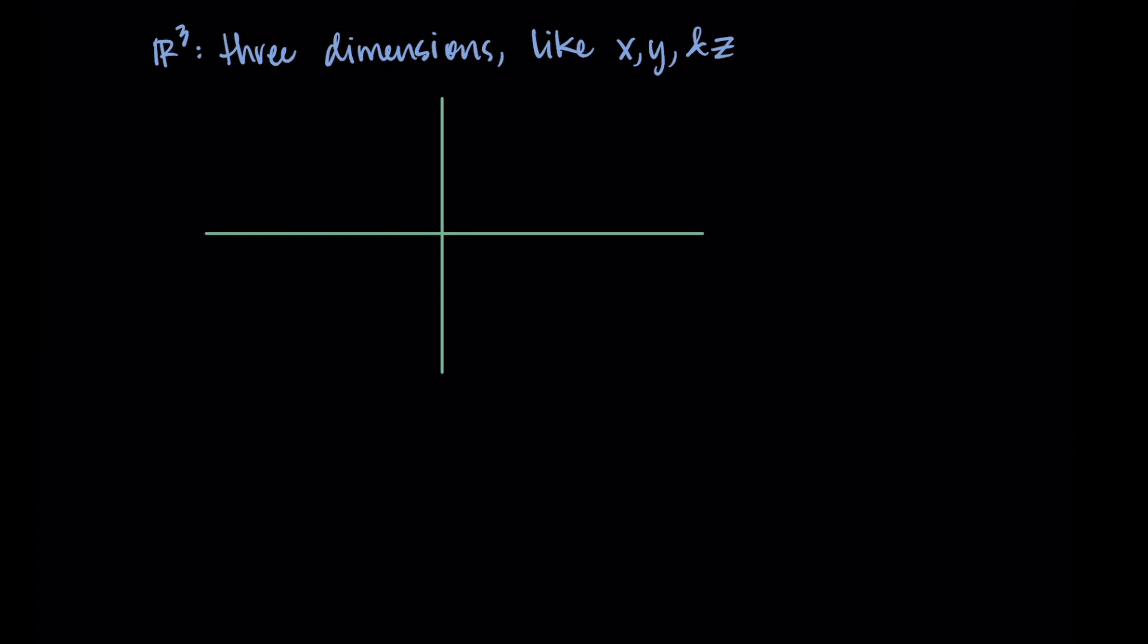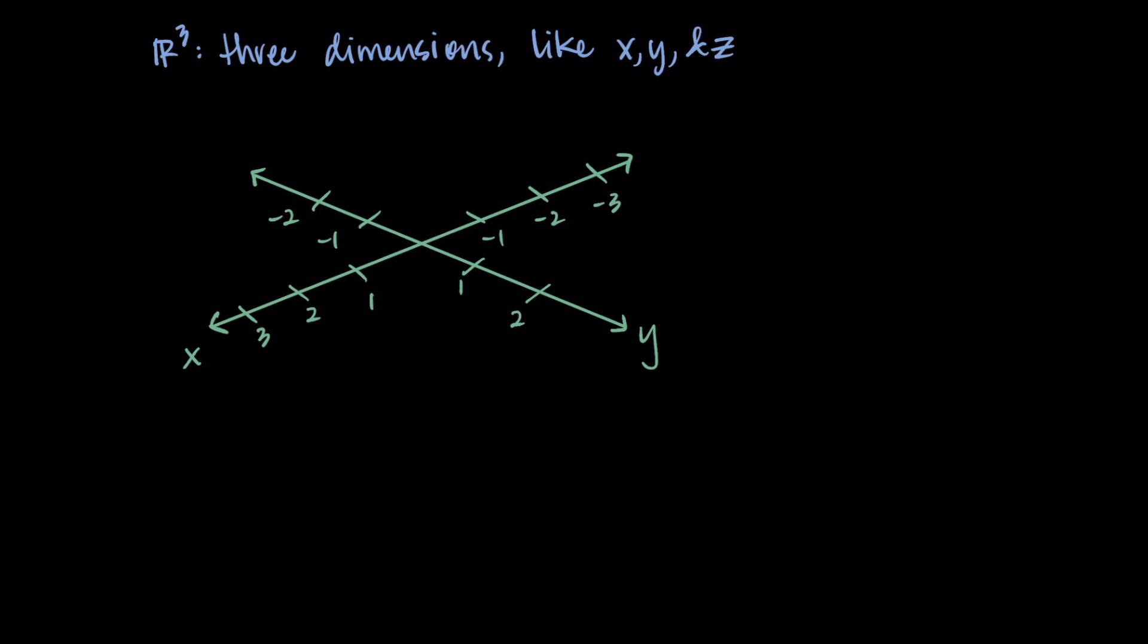Then we can add another dimension and look at ℝ³. So now we have three dimensions. We take those two axes and lay them down flat and we add a third vertical axis that is the height. So now we have x, y, and z axes. That's just our usual way of referring to them.